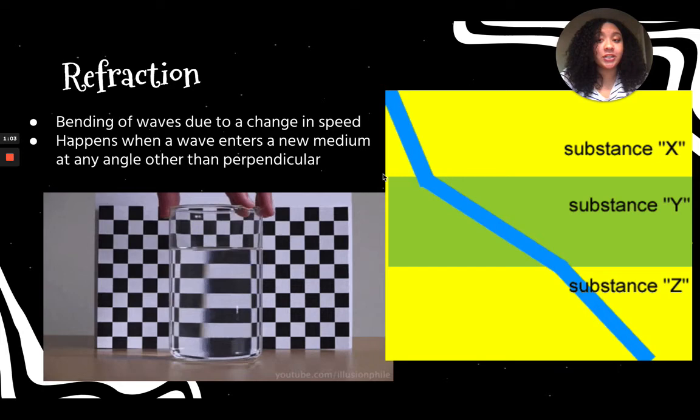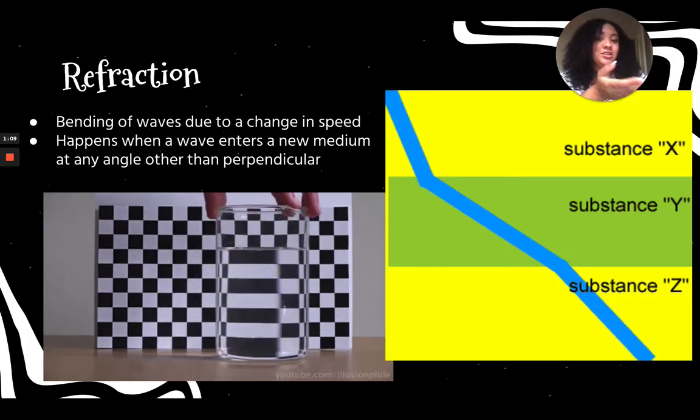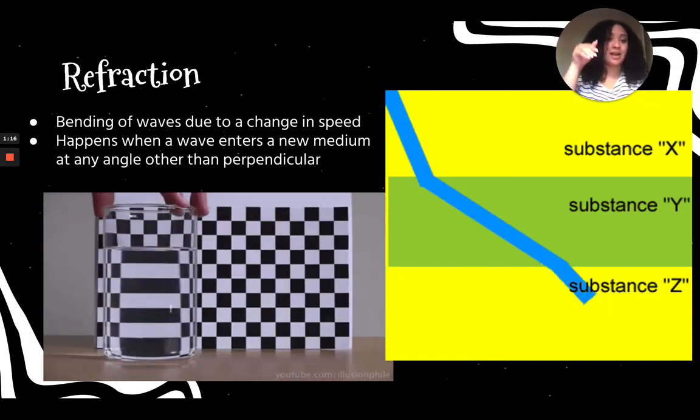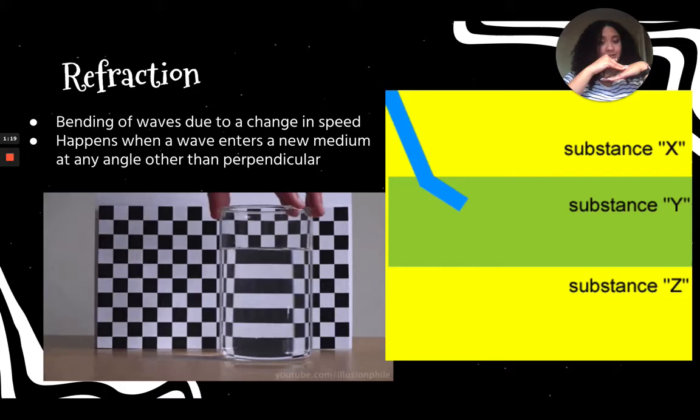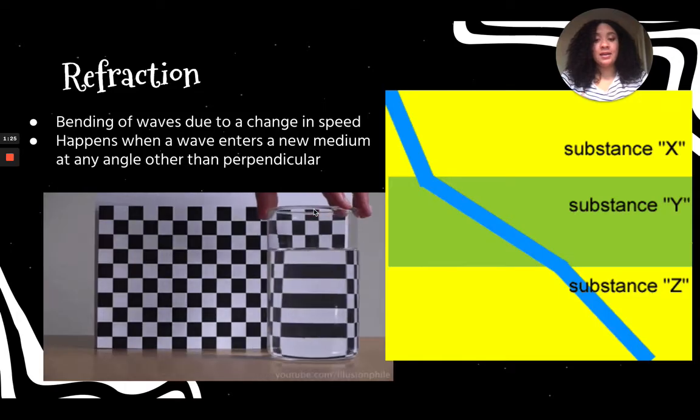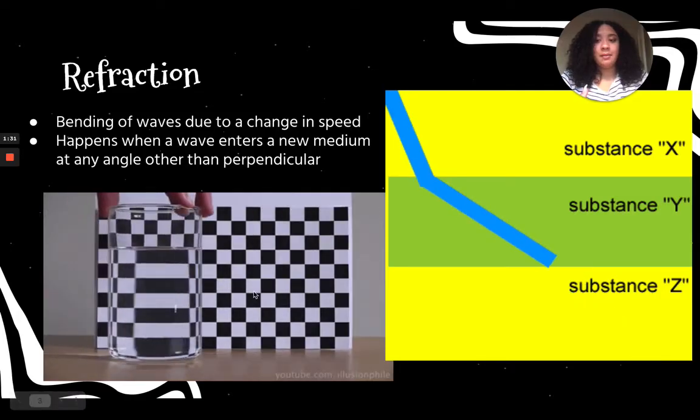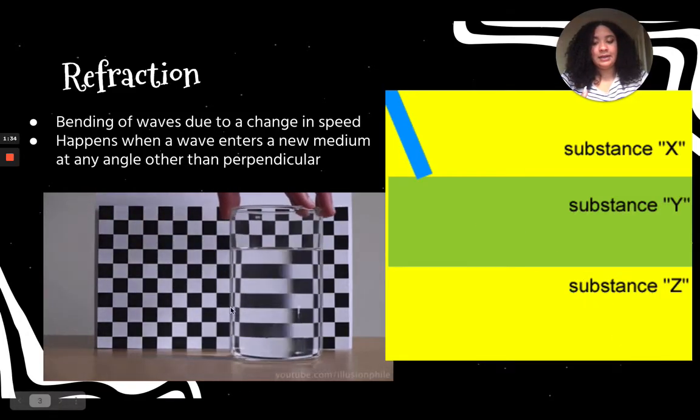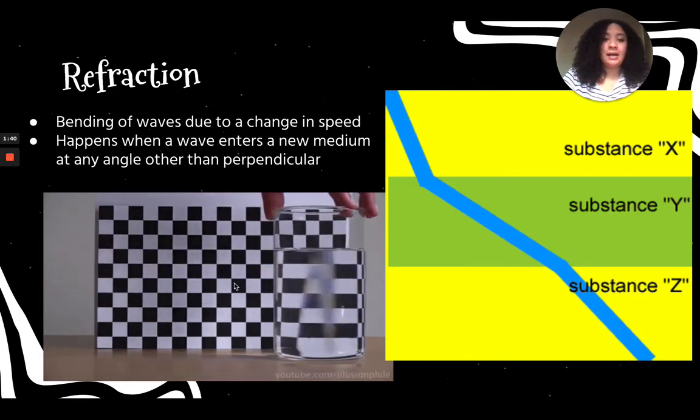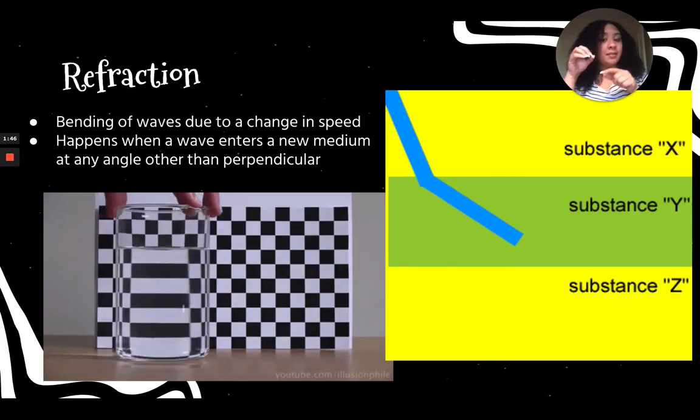Next is refraction. That's the bending of waves due to the change in speed. A change in speed usually happens when a wave enters a new medium at an angle that's not perpendicular, not straight down, going kind of at a slant. We can see this in a clear cup. This gif right here is showing the refraction of the waves, the light reflection, making it longer and bent. You could also see it with a pencil in a clear glass. If you put the pencil in, the pencil will kind of look like it's bending.